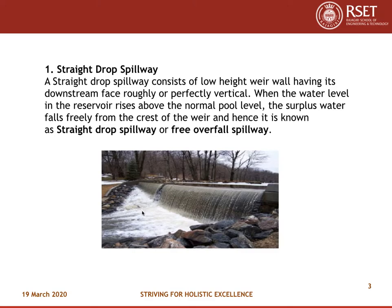First, let us take the straight drop spillway. This figure shows the straight drop spillway. A straight drop spillway consists of a low height weir having its downstream face roughly or perfectly vertical. When the water level in the reservoir rises above the normal pool level, the surface water falls freely from the crest of the weir, and hence it is known as straight drop spillway or free overfall spillway. The figure shows that as the water level on the upstream side rises, it falls freely over the weir.